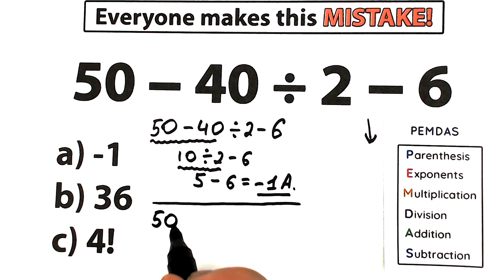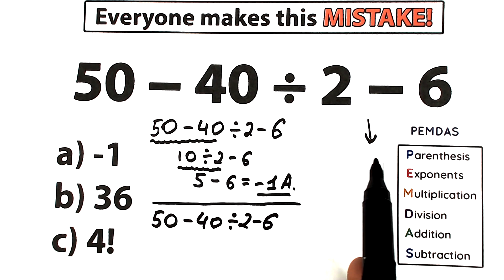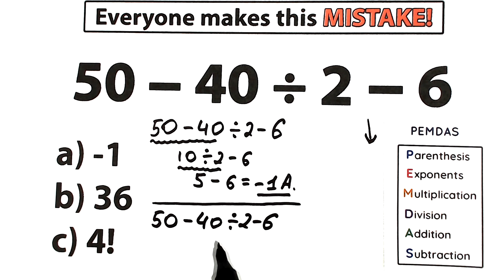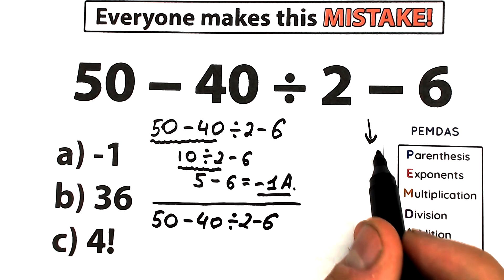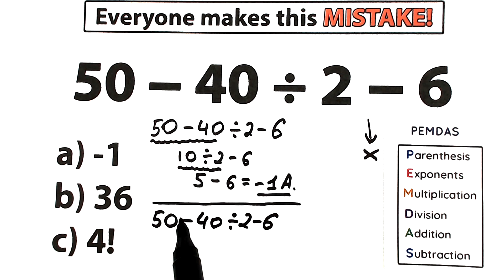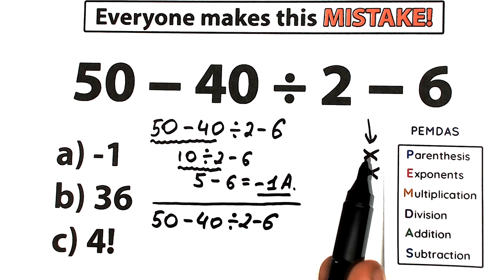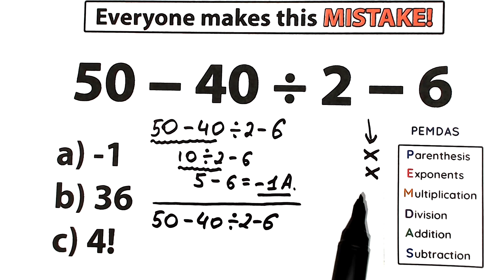So we have 50 minus 40 divided by 2, and minus 6. Let's go through the steps. First step according to PEMDAS is parentheses — I don't see any parentheses here, so we skip this part. Next step: exponents — no squares or cubes here, no powers, so we skip exponents too. We skip these first two steps.